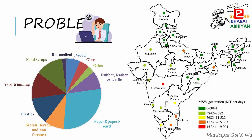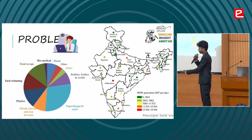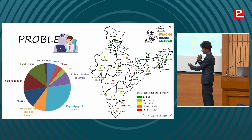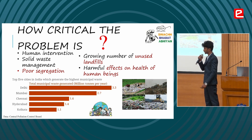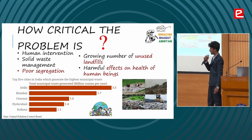In India, there are thousands of metric tons of waste accumulated in every state. These are the main types of waste that have been segregated in our country. We need a large set of members working to segregate these types of waste for the segregation process and to dispose of them.